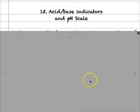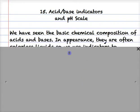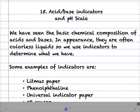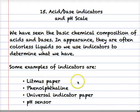The 15th podcast is about acid and base indicators and the pH scale. In the previous podcast we've seen the basic composition of acids and bases, but in appearance when we look at these liquids they're often just colorless liquids dissolved in water. So we use indicators to determine what we have, whether we've got acid or base and the strength of these things. We've got several at our disposal, some of which we've seen in class: litmus paper, phenolphthalein which is a liquid indicator, universal indicator paper, and pH sensors.